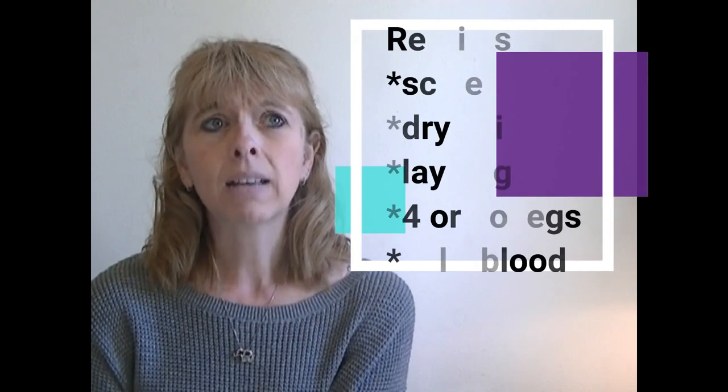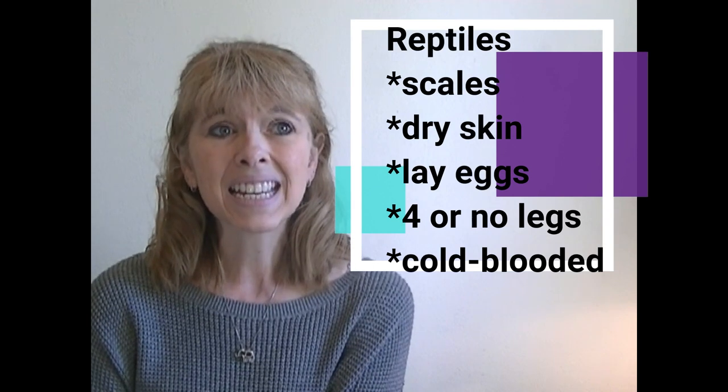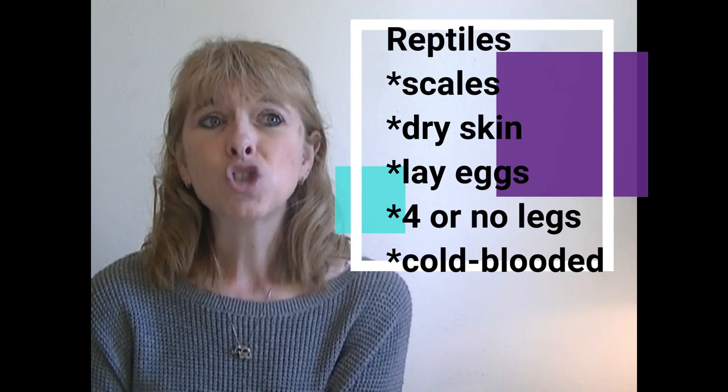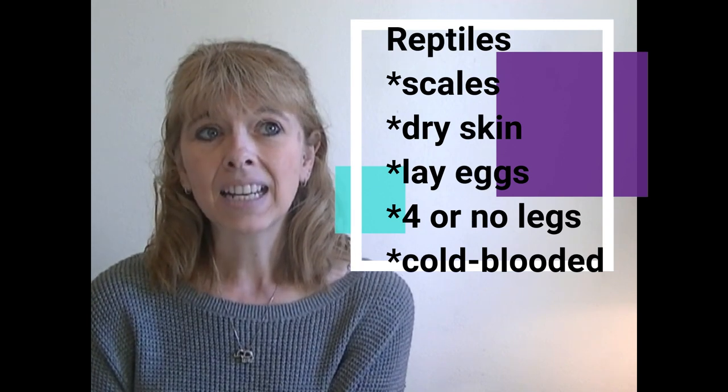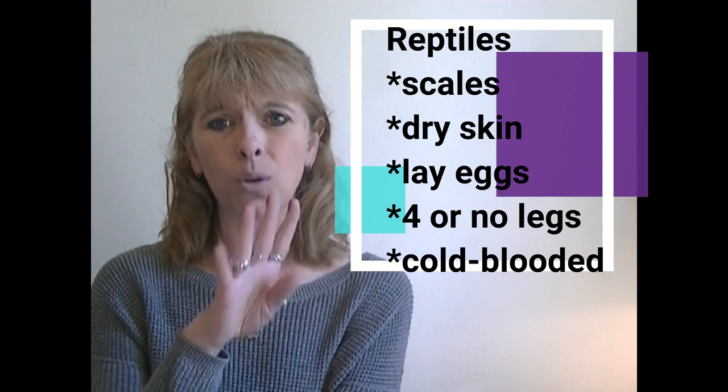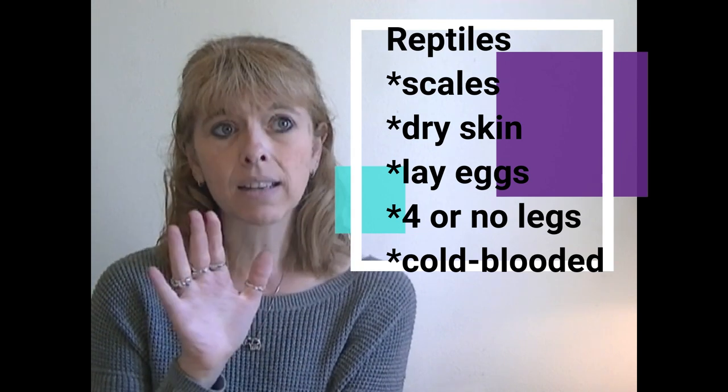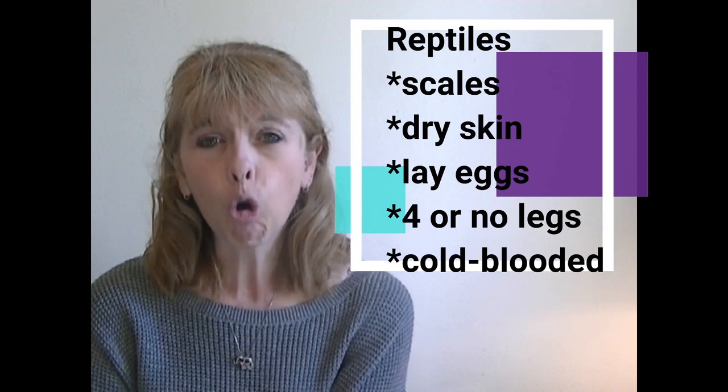Now, the next type of animal we're going to be talking about today and categorizing on our tables are the reptiles. So there are things about reptiles that make them different than other types of animals. Reptiles have scales. They have dry skin. They usually lay eggs. They sometimes have four legs or else they have no legs at all. And they are cold blooded.